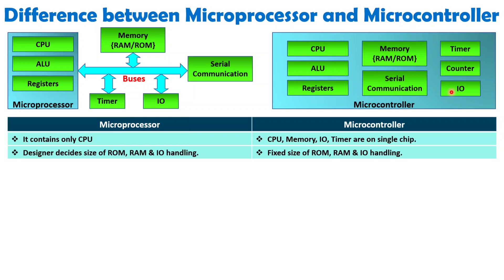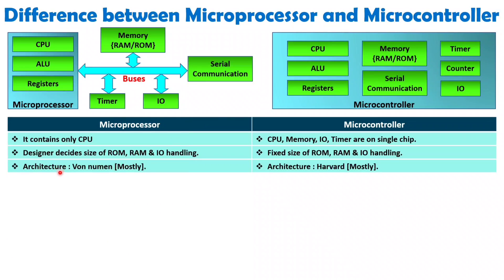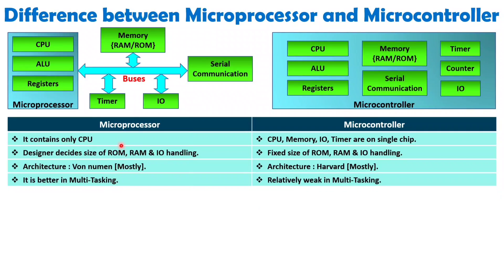The on-chip memory of a microcontroller is fixed and cannot be changed. When we talk about architecture, the majority of microprocessors follow Von Neumann architecture, but with microcontrollers, the majority follow Harvard architecture — like in the 8051, Harvard architecture is used. With Intel microprocessors, in majority of cases you will observe Von Neumann architecture. Regarding multitasking, microprocessor is way better at multitasking because it is used for general purpose. With microcontrollers, multitasking depends on which microcontroller you have, but it will be relatively weak compared to microprocessor.